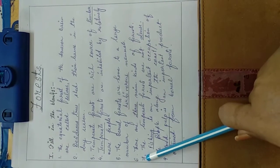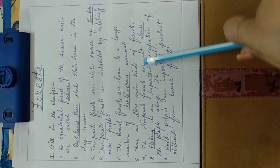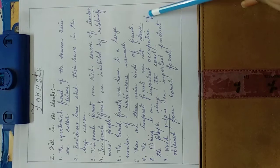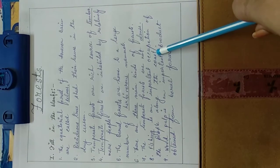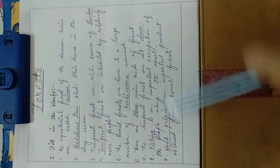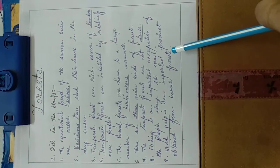Number seven: the temperate forests are not dense. Number eight: fishing is an important occupation of the people along the coast. Number nine: wood pulp is an important product obtained from the boreal forest.